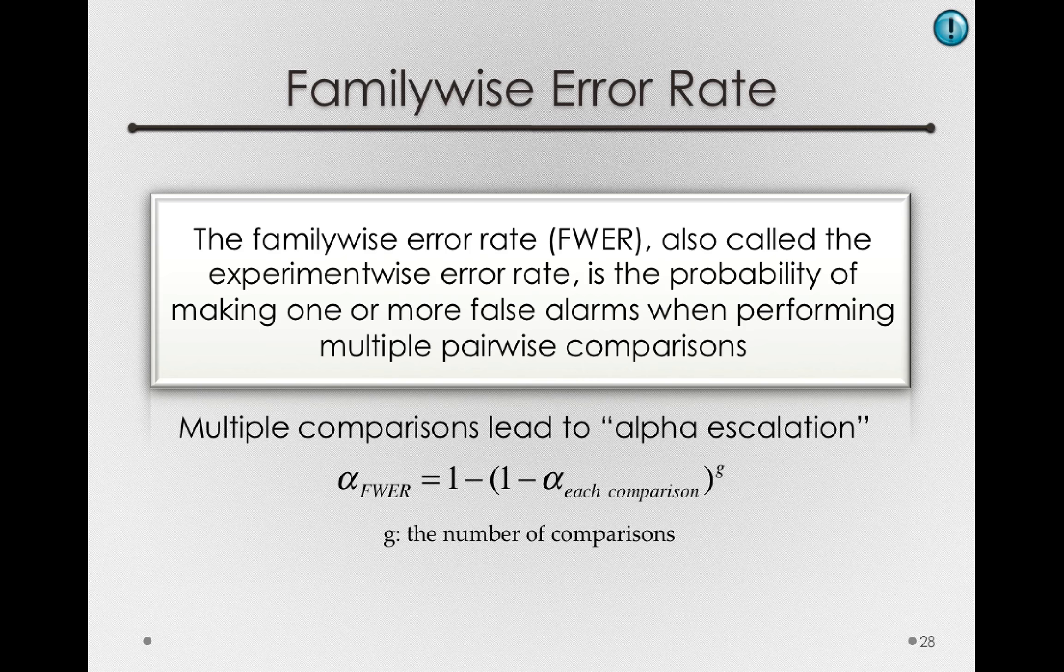Clearly, we need a way to control our family-wise error rate in the context of all these multiple comparisons. That is, we need a way to make sure we're not false alarming all of the time when we have so many different comparisons to make.